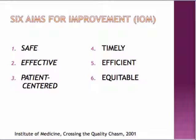And finally, the sixth aim is for care to be equitable — providing care that does not vary in quality because of personal characteristics such as gender, ethnicity, geographic location, and socioeconomic status.